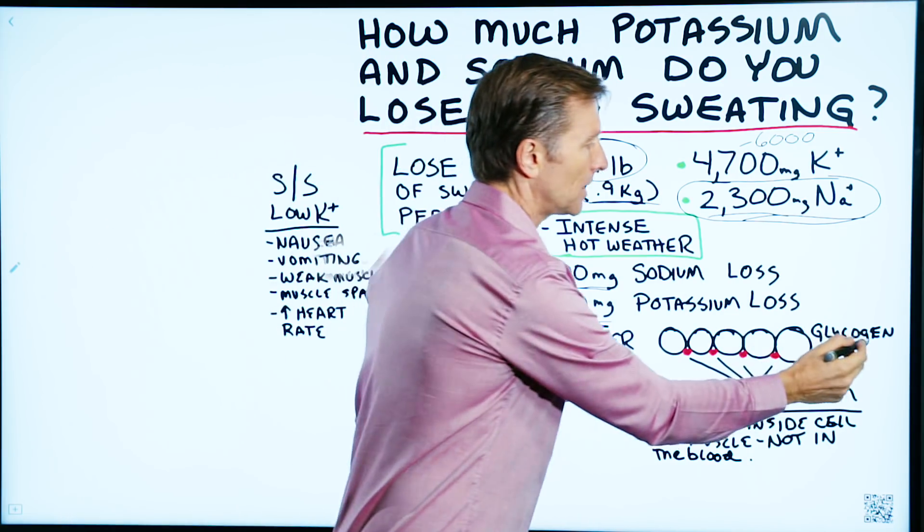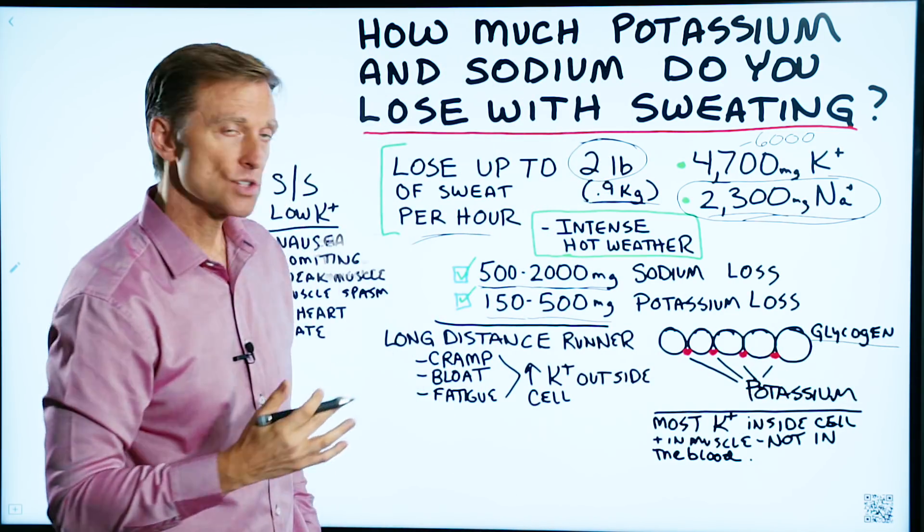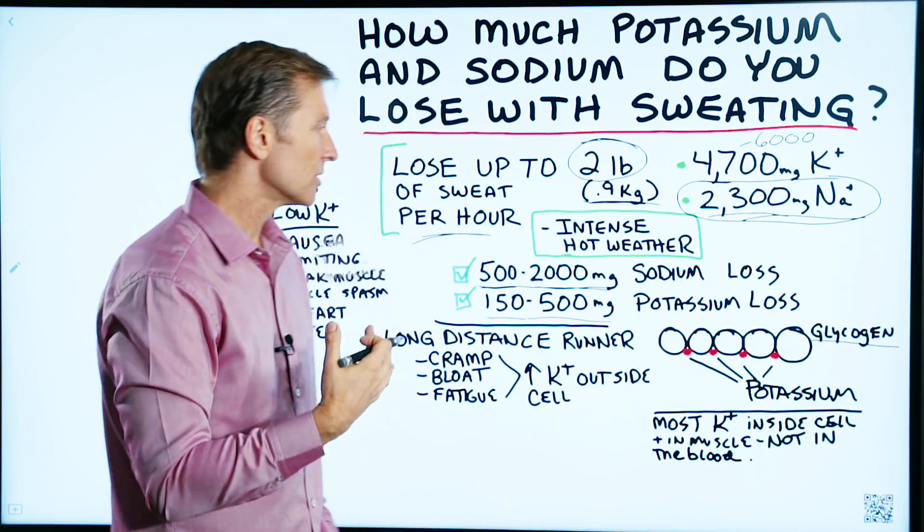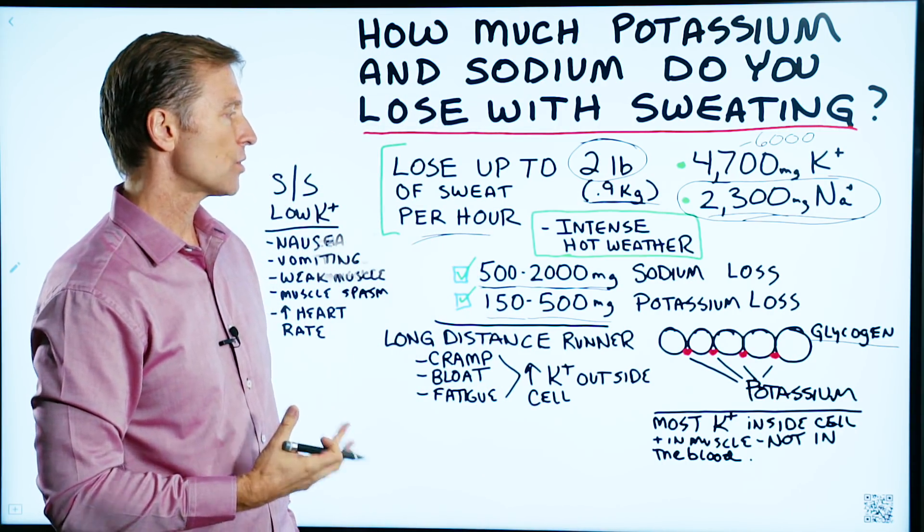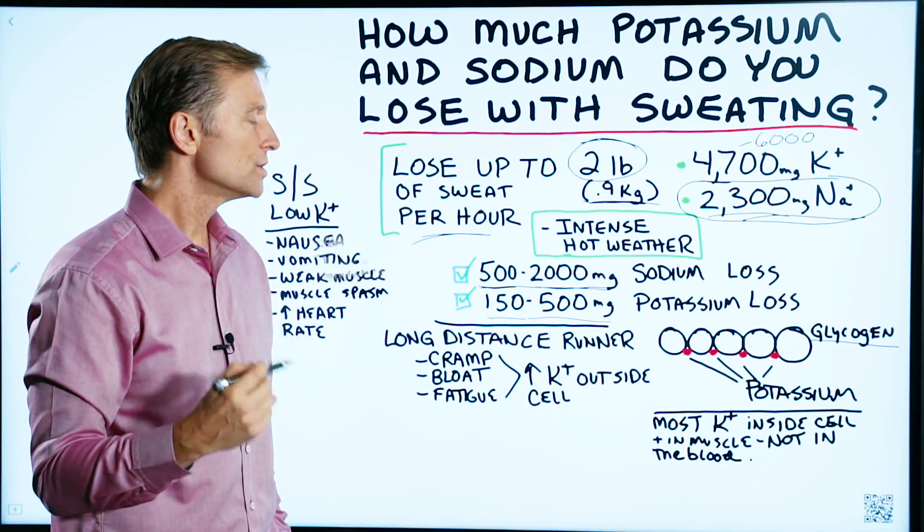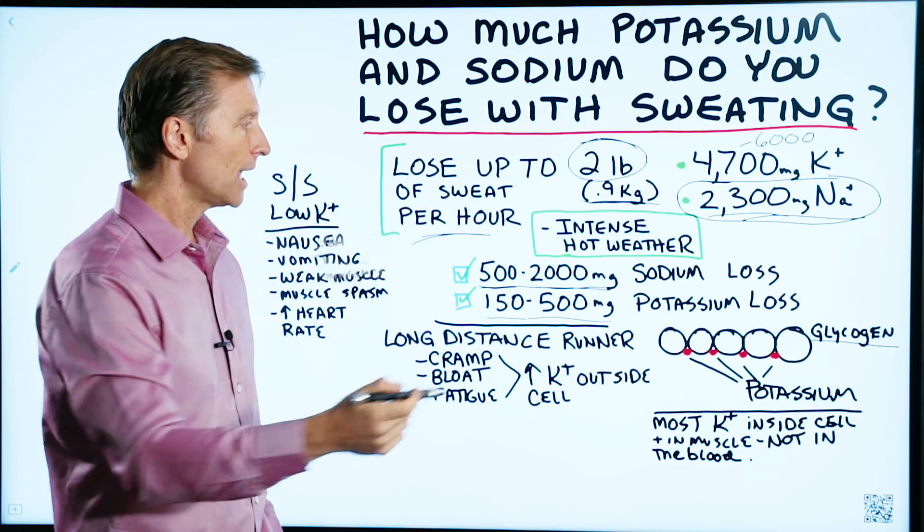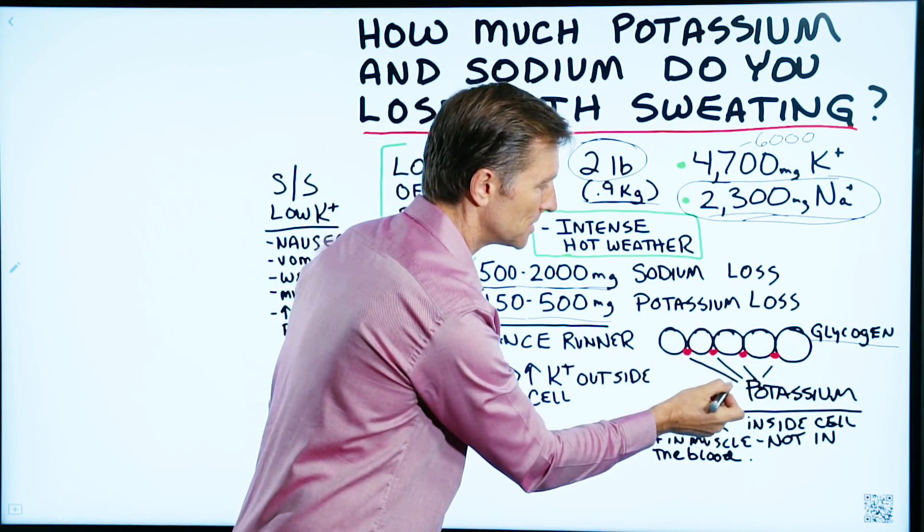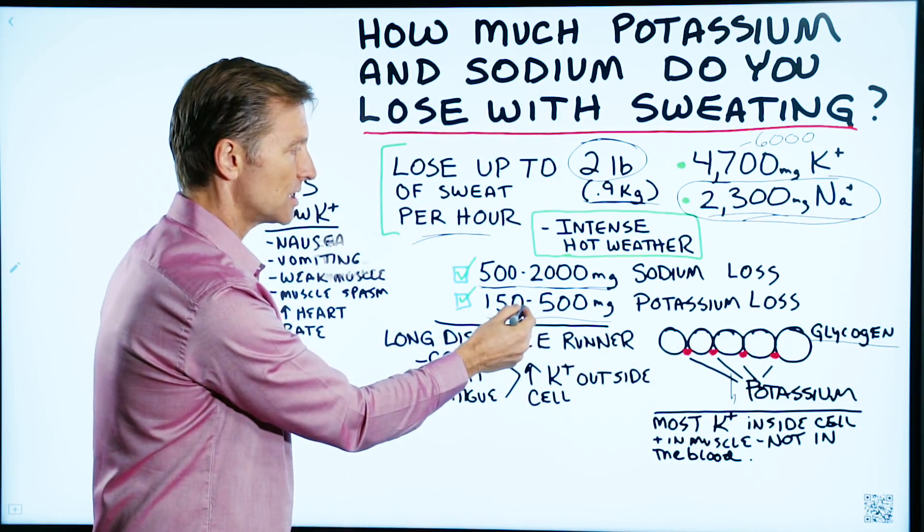You also have something called glycogen. Glycogen is stored glucose in your muscle and in your liver. And anytime you store glucose, you need potassium. So two things. Number one, you're using up your glycogen. And when you lose your glycogen when you're exercising, you're losing your potassium too. So that's an addition to this amount.